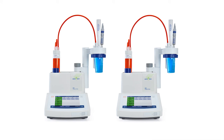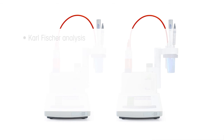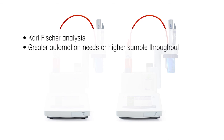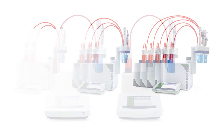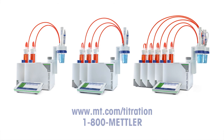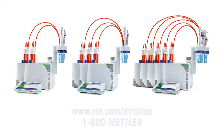Finally, the compact titrators are part of a much larger titration product offering from Mettler Toledo. So if your lab is in need of more capabilities such as Karl Fischer analysis, greater automation needs, higher sample throughput, more than one burette and electrode available for titration, or more method functions, you can find information about our Titration Excellence line at www.mt.com/titration, where you can also notify us to have someone contact you.